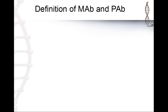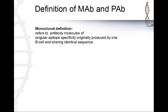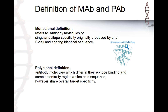So what is the definition of a monoclonal antibody versus a polyclonal antibody? A monoclonal antibody is an antibody generated from a single B cell targeting a single epitope of an antigen — a strict single lineage. In the case of a polyclonal antibody, we have a mixture of antibodies attacking different sites of an antigen's epitope.